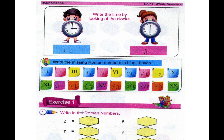In exercise 1, write in Roman numbers. We have simple digits and we have to write them in Roman numbers. We have 2, so we write double I which shows us 2. Here we have 7, so V double I shows us 7. Here we have 12, so XII — X double I — shows us 12. It shows us 5. For 19, we write XIX which shows us 19.